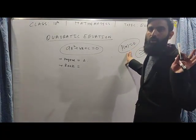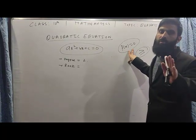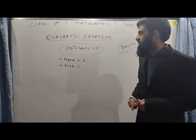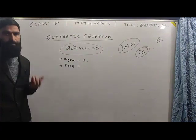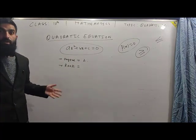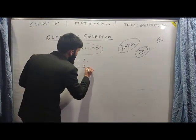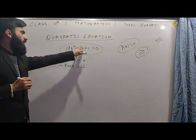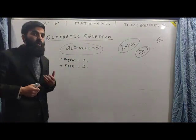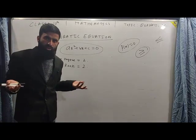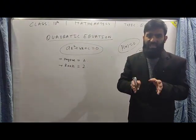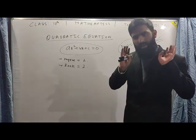The second theorem states that a polynomial of degree n has exactly n roots. So for a quadratic equation, the degree is 2, meaning it will have 2 roots. Roots are the values of variables which satisfy the given equation — that is the definition of roots. So for our quadratic equation ax² plus bx plus c equals zero, we will have 2 roots.